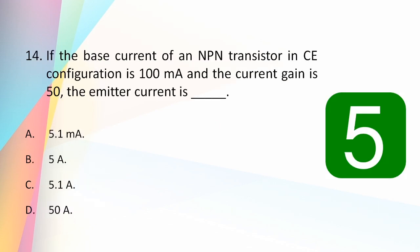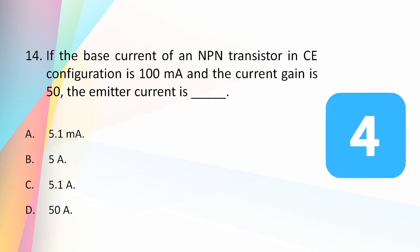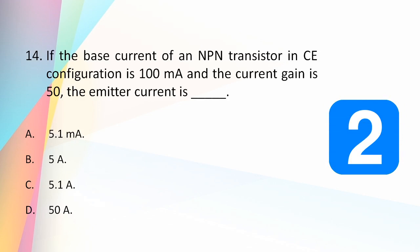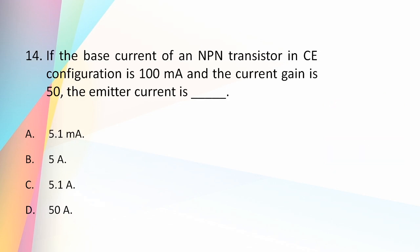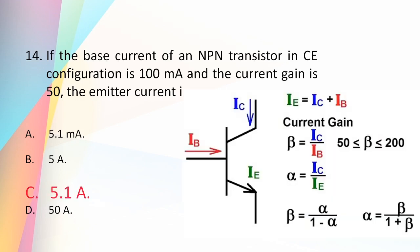If the base current of an NPN transistor in common emitter configuration is 100 milliamps and the current gain is 50, the emitter current is: 5.1 milliamps, 5 amps, 5.1 amps, or 50 amps? The answer is 5.1 amps. This can be obtained from the equations β = IC/IB and IE = IC + IB.